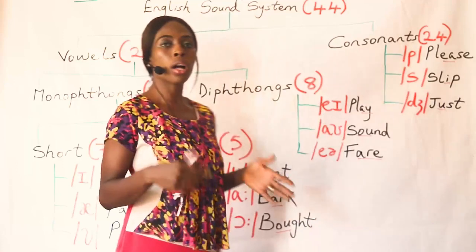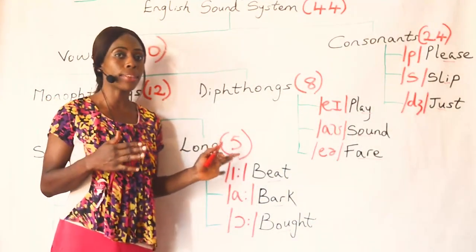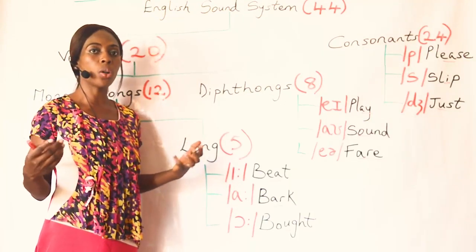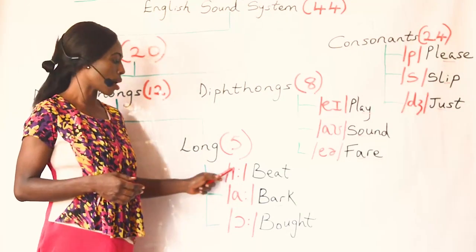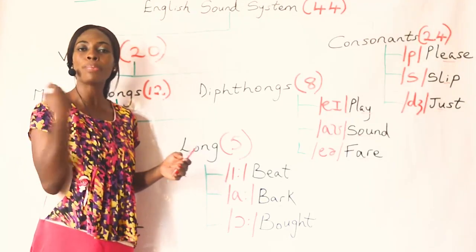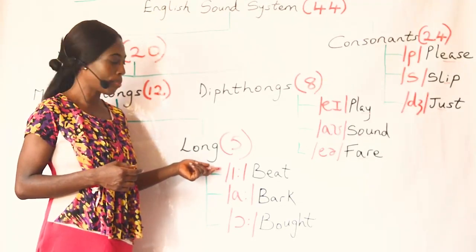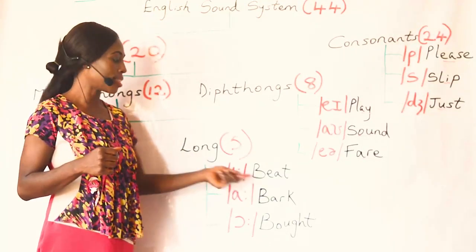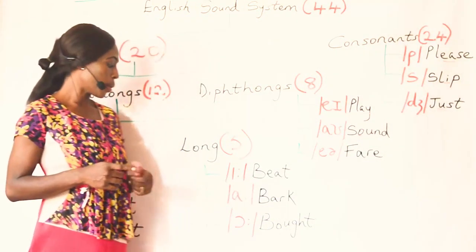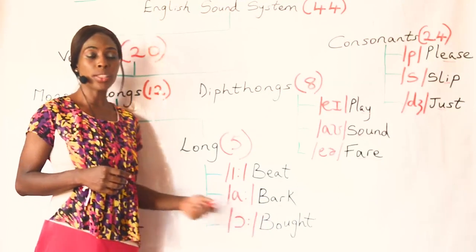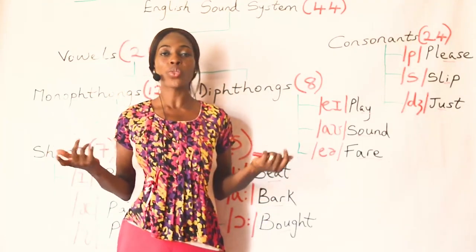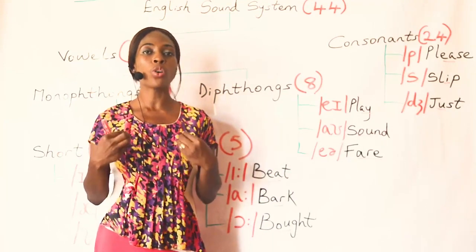Now let's look at the long monothongs. The long monothongs are 5 in number, and I have three examples here. These are long sounds — the duration spent on them is longer than the short sounds. These sounds also have a length mark: the colon symbol — two dots — which shows you should produce the sound longer and spend more time producing it. We have /iː/ — the long E sound — as in 'beats.' Then we have /ɑː/ as in 'bark.' And we also have /ɔː/ as in 'boards.' When producing these sounds, you'll find that the shape of your lips changes — it could be round, spread, or even neutral. So when producing vowels, be conscious of the shape of your lips.